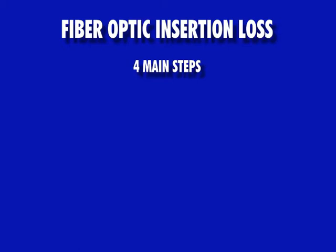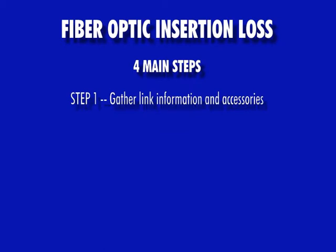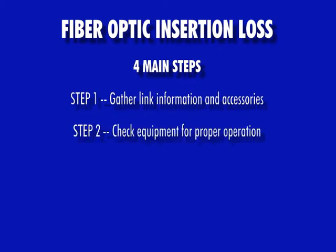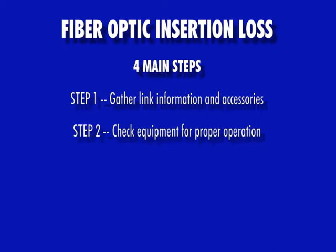There are four main steps in the process of measuring insertion loss of any fiber optic link. These steps are: gathering link information and accessories, checking the equipment and accessories for proper operation, setting an optical reference (also called zeroing), and then taking insertion loss measurements.